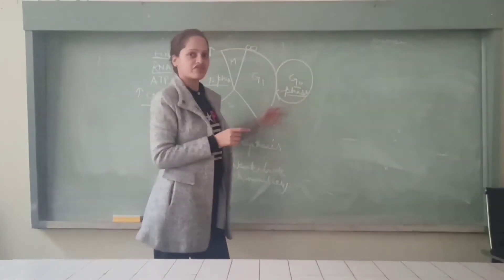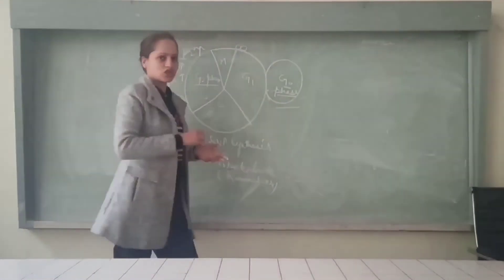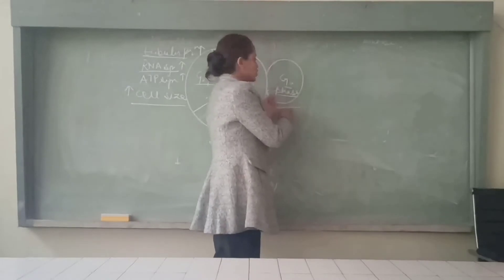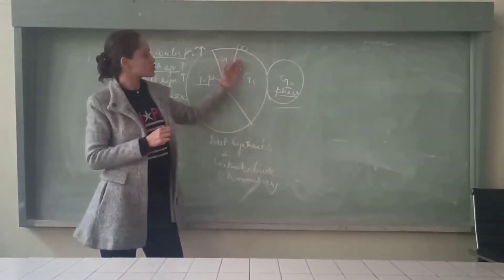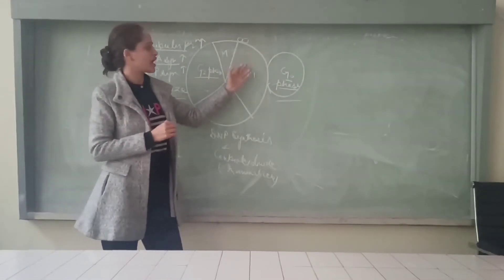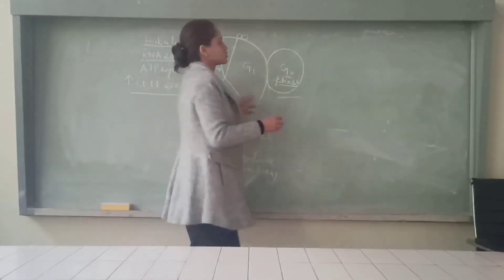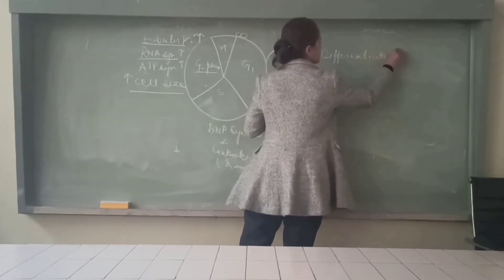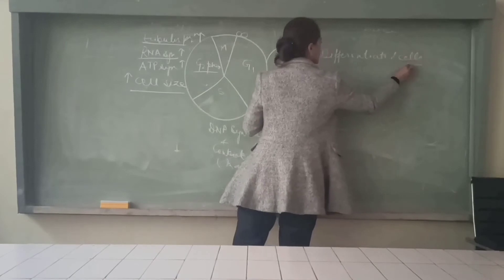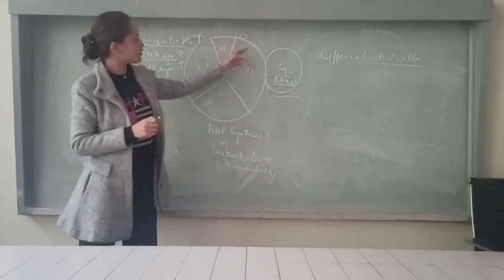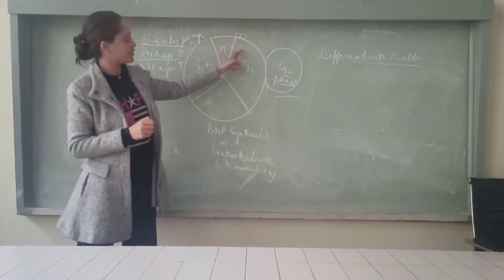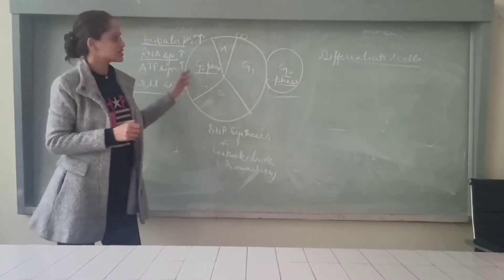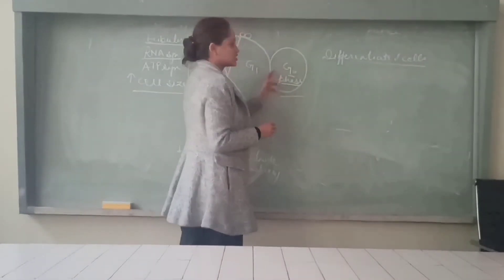G0 is the quiescent phase — there is no cell division, but cell growth can take place here. If a cell is supposed to be differentiated after division, it is not dividing, so it will enter the G0 phase. Meristematic cells will undergo further division and will not enter the G0 phase — they come after M phase and re-enter G1, S, G2, following the cycle. Only differentiated cells will enter the G0 phase.